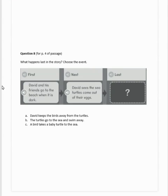And, number eight. We can find this on page four of the passage. What happens last in the story? Choose the event. And we are filling in our missing blank here. So they have first, David and his friends go to the beach when it is dark. Next, David sees the sea turtles come out of their eggs. Last. A, David keeps the birds away from the turtles. B, the turtles go to the sea and swim away. Or C, a bird takes a baby turtle to the sea.